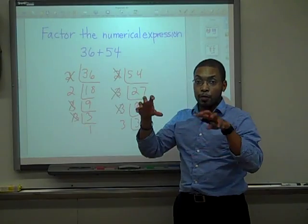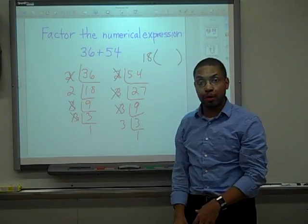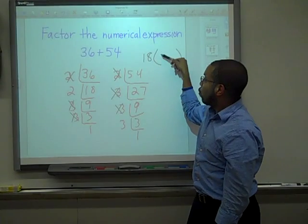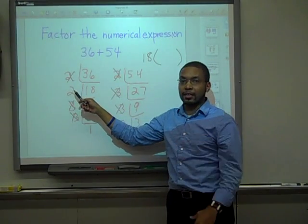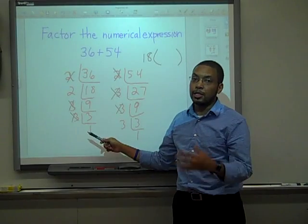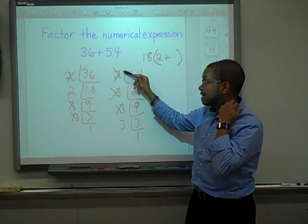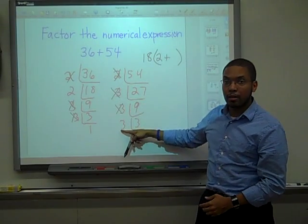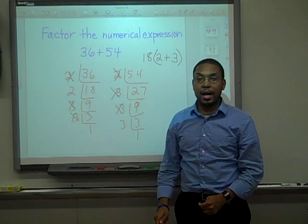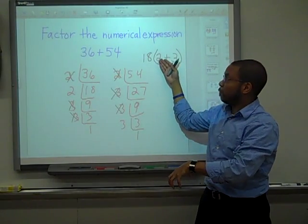So the greatest common factor of 36 and 54 is 18. I'm going to take it out and show you how we can use the distributive property to factor. Remember, to factor means to take the GCF out of a group. Now we're going to look at the product of the uncrossed-out factors. The product of the uncrossed-out factors for this column is 2 times 1, which is 2. And 3 is not crossed out — 3 times 1 is 3. So you just factored out 36 plus 54 by taking 18 as the greatest common factor out and being left with 2 plus 3 on the inside.